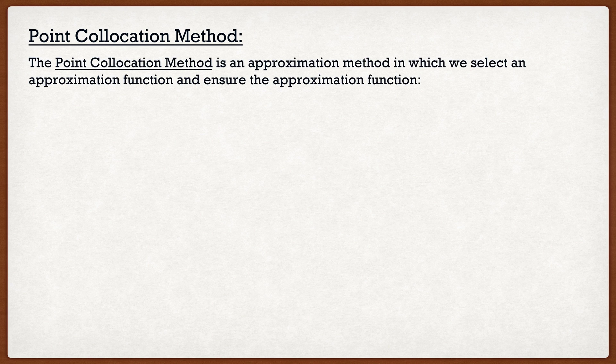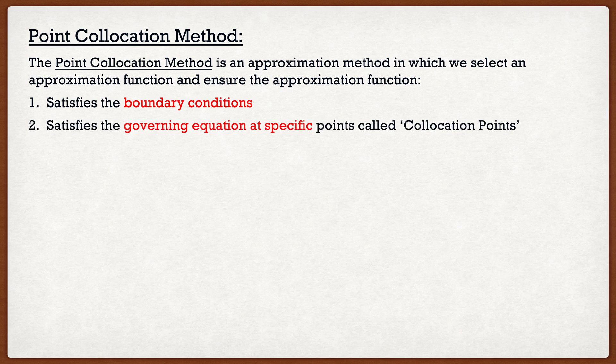The point collocation method is very simple. What we do in this method is we select an approximation and we basically ensure two things: one is that our approximation function satisfies the boundary conditions, and two, our approximation function satisfies the governing equation at very specific points called collocation points. And that's it. The best way to really show you guys this method is through an example.